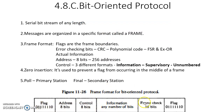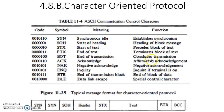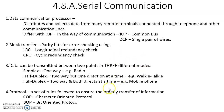The frame format contains information along with address, control, frame check bits, and flags as the boundaries of the frame. This is serial communication, and we have seen two different types of protocols: character-oriented protocols and bit-oriented protocols. The difference is the framing of data — in character-oriented protocol, characters are used; in bit-oriented protocol, individual bits are used. Thank you.